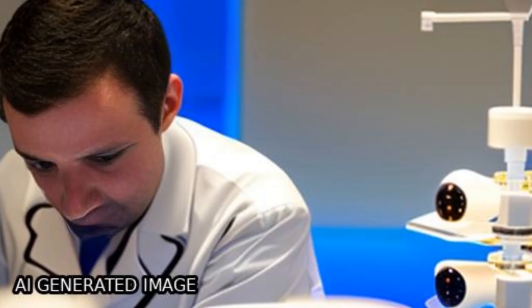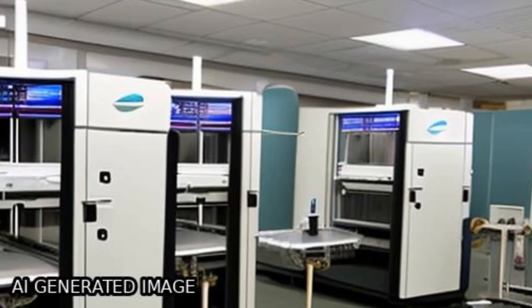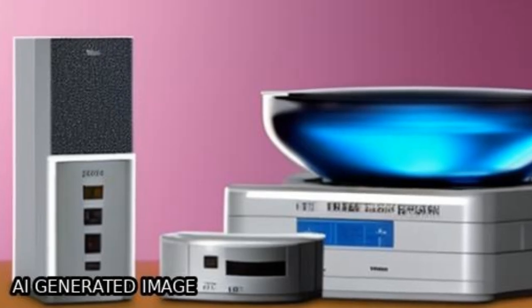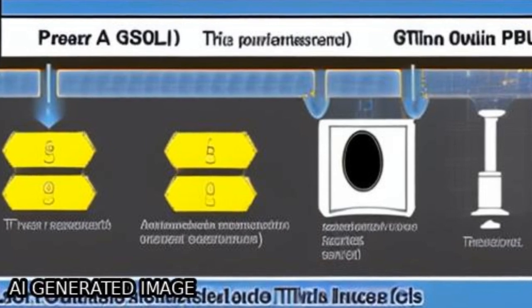The XRD spectra confirmed anatase phase with preferential orientation along 101 plane, while AFM images showed good quality and pyramidal shape.